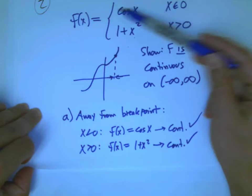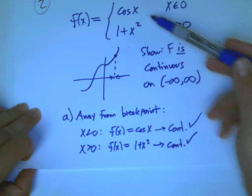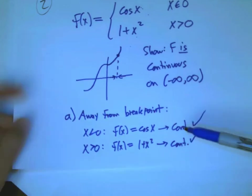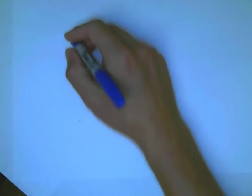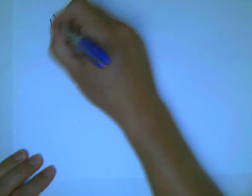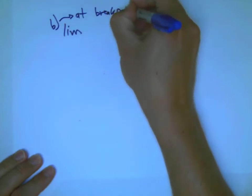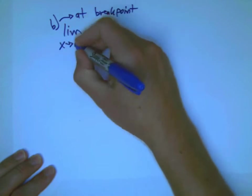Now, the only thing that would go wrong with that, what if this were tangent x, for example? I would not be able to say that's continuous everywhere away from the breakpoint, because there are points that are not in the domain and that are points of discontinuity. Now, what about at the breakpoint? That's very similar to what we just did, but we're going to get a positive answer, a yes answer instead of no. We're going to take the limit, so this is step b, at the breakpoint.